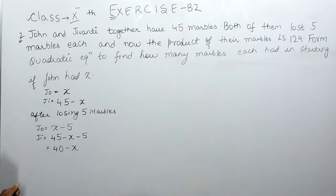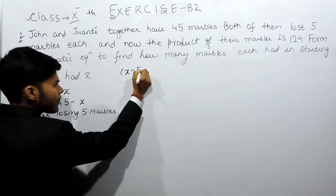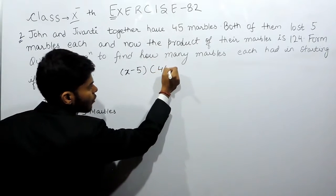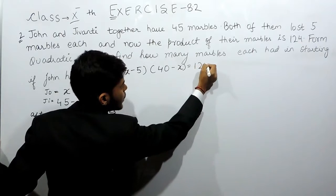Now we are given that the product of their marbles after losing 5 is equals to 124. That means that x minus 5 multiplied by 40 minus x is equals to 124.